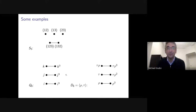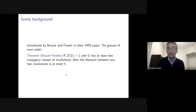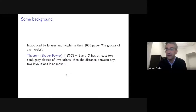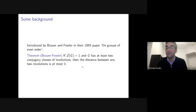Commuting graphs were first introduced in the seminal 1955 paper by Brauer and Fowler on groups of even order — one of the founding papers towards the classification of finite simple groups. They bound the order of a group by the order of the centralizer of an involution. In that paper they introduce the notion of the commuting graph of a group; their groups have trivial center, so they only exclude the identity for the vertex set.